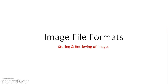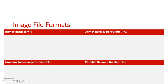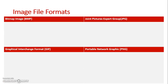We're now going to look at a few image file formats used for storing bitmap images. Some of these involve file compression, so it's important we understand the differences between them. Here are the four file formats we're going to look at: a bitmap image, a Joint Pictures Expert Group image, a Graphical Interchange Format image, and a Portable Network Graphic image.